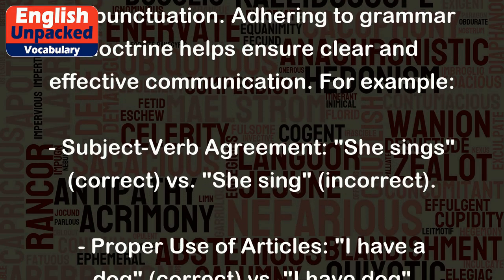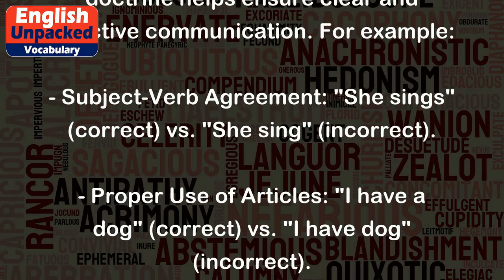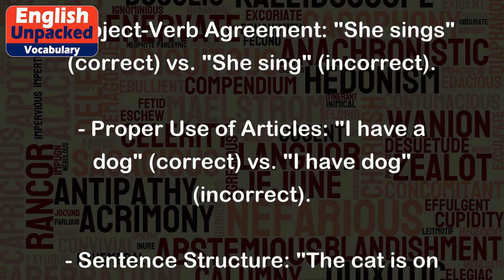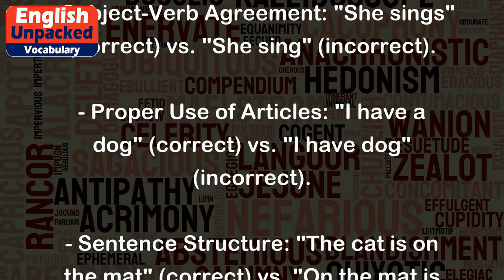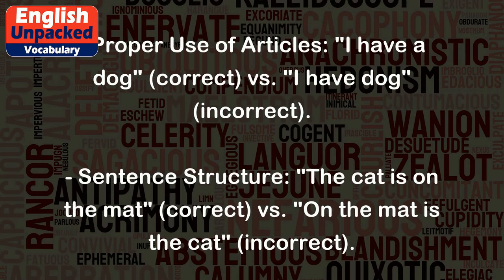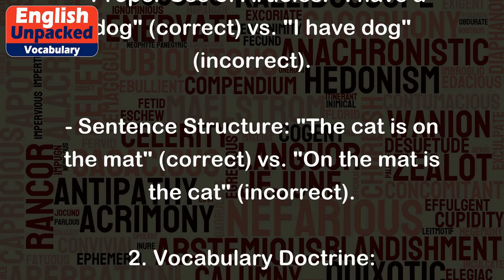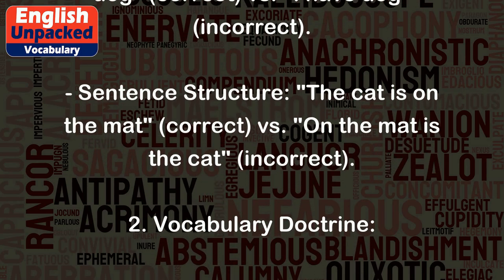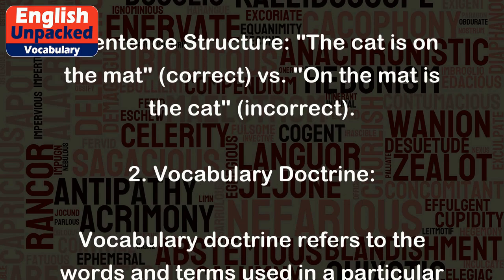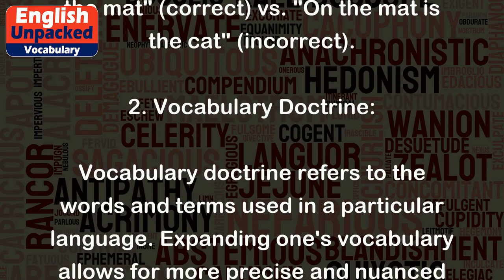For example, subject-verb agreement: 'She sings' (correct) versus 'She sing' (incorrect). Proper use of articles: 'I have a dog' (correct) versus 'I have dog' (incorrect). Sentence structure: 'The cat is on the mat' (correct) versus 'On the mat is the cat' (incorrect).